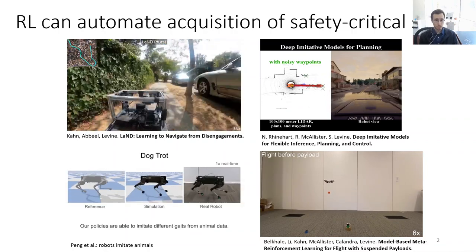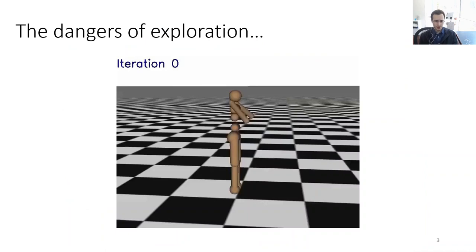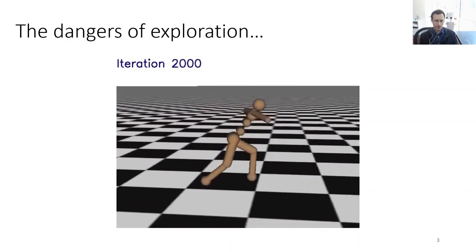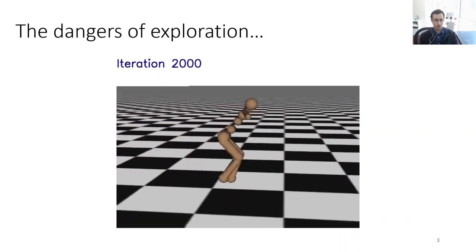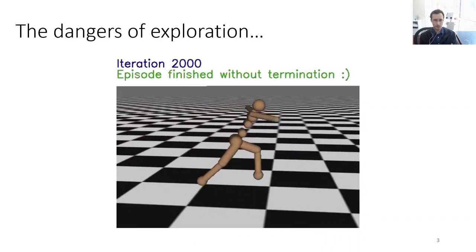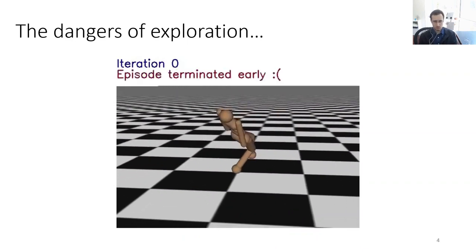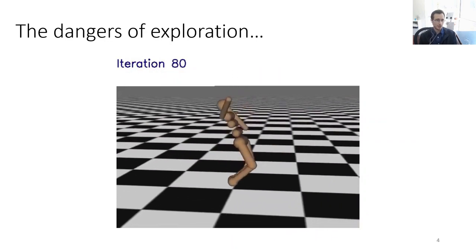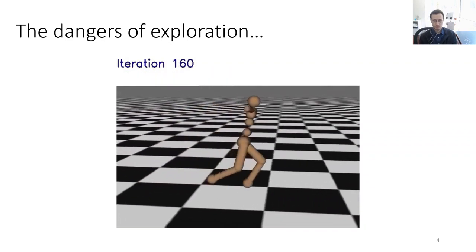In principle, a very well-trained reinforcement learning policy can be very good at this. However, to get there, we often need to go through a little bit of trouble. As an example, consider this walking robot. After 2000 iterations of TRPO, we can get the walking robot to run more or less continuously on an infinitely long flat plane. However, during the training process, it has to do a bunch of things like this. So if this was a real-world physical system, by the time it gets to the 2000th iteration, it would have probably long ago broken itself or damaged something.